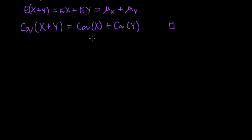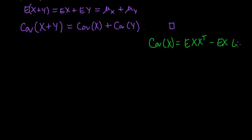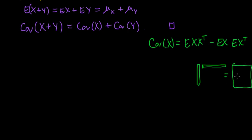It turns out we can use a very handy fact: the covariance of a vector X can be written as the expected value of X X-transpose minus the expected value of X times the expected value of X-transpose, where X is a column vector. The (i,j)-th entry of this matrix is the expected value of Xi times Xj minus the expected value of Xi times the expected value of Xj, which is the definition of covariance.